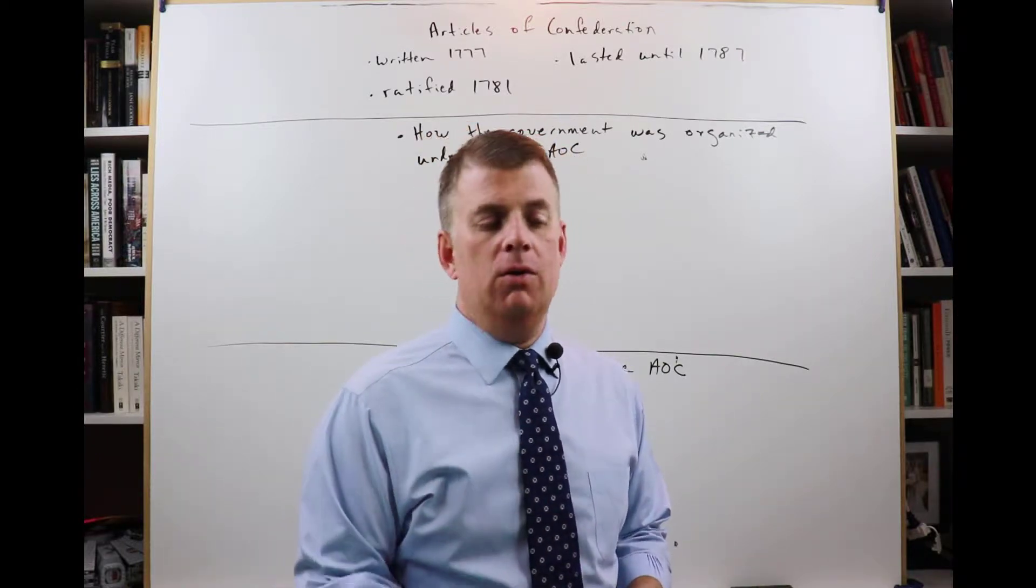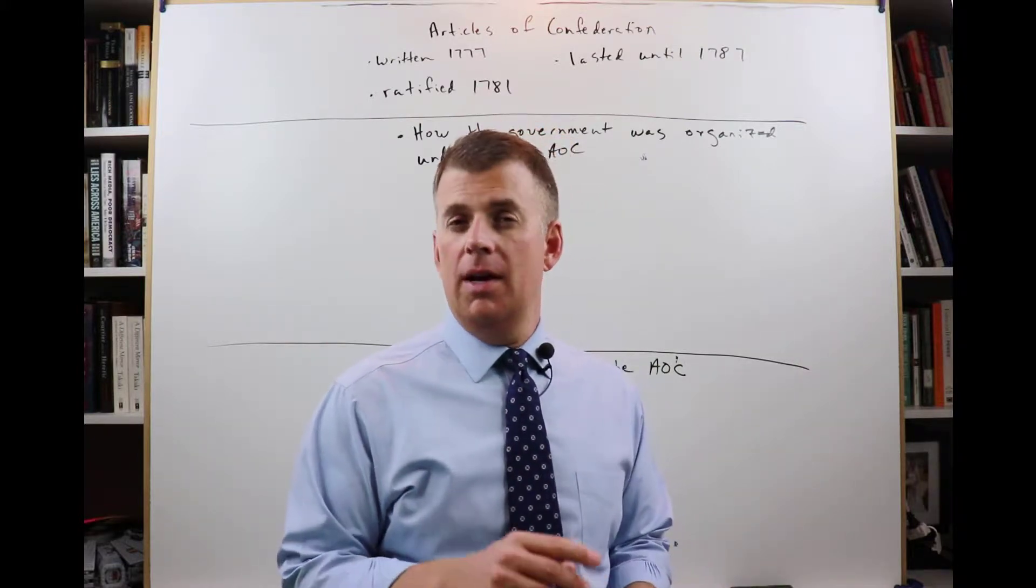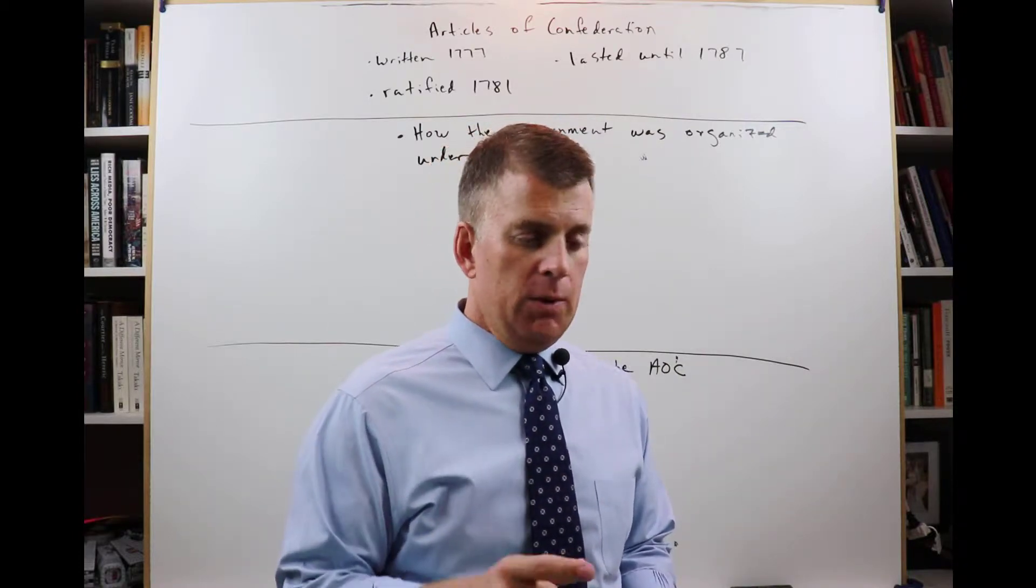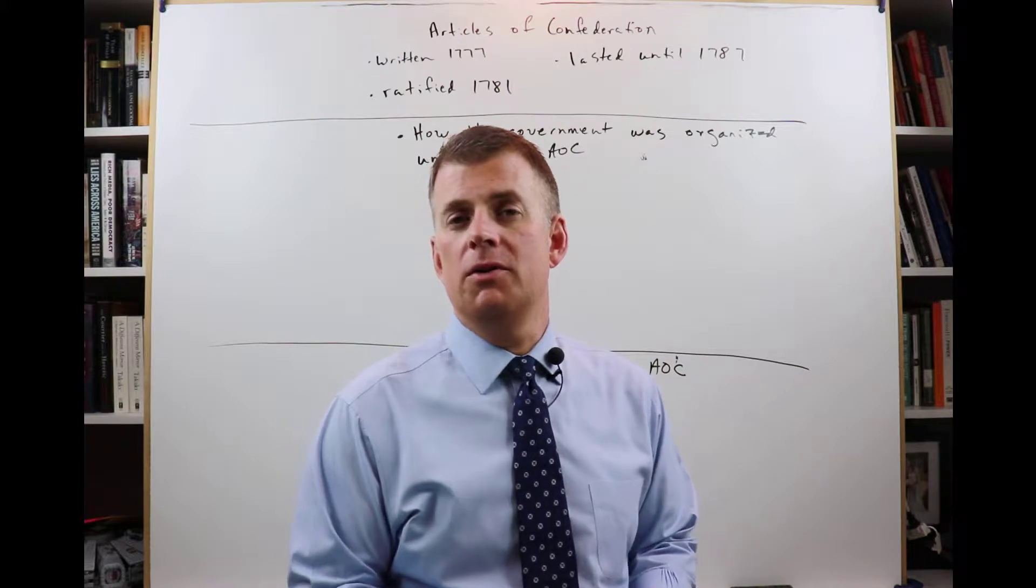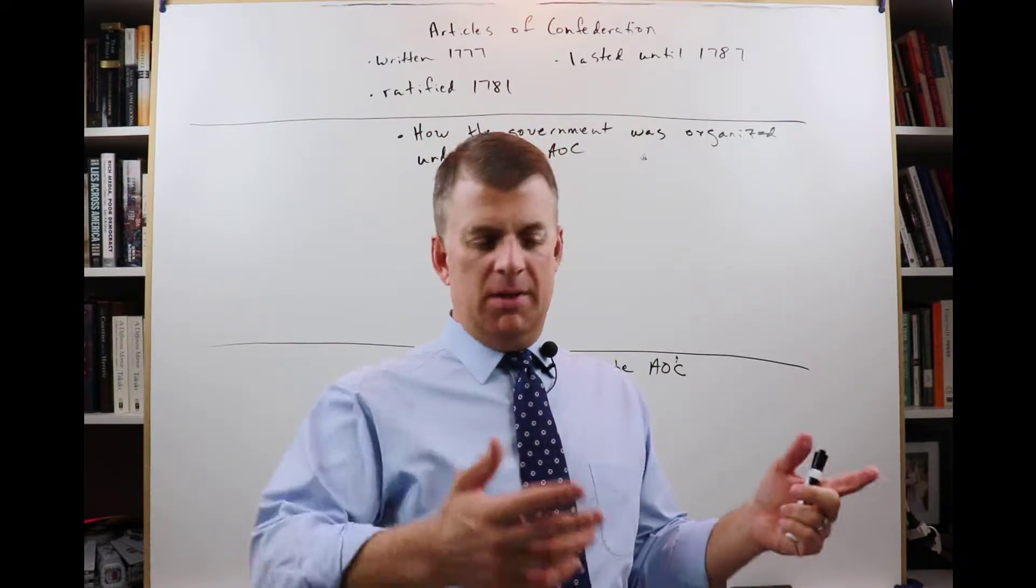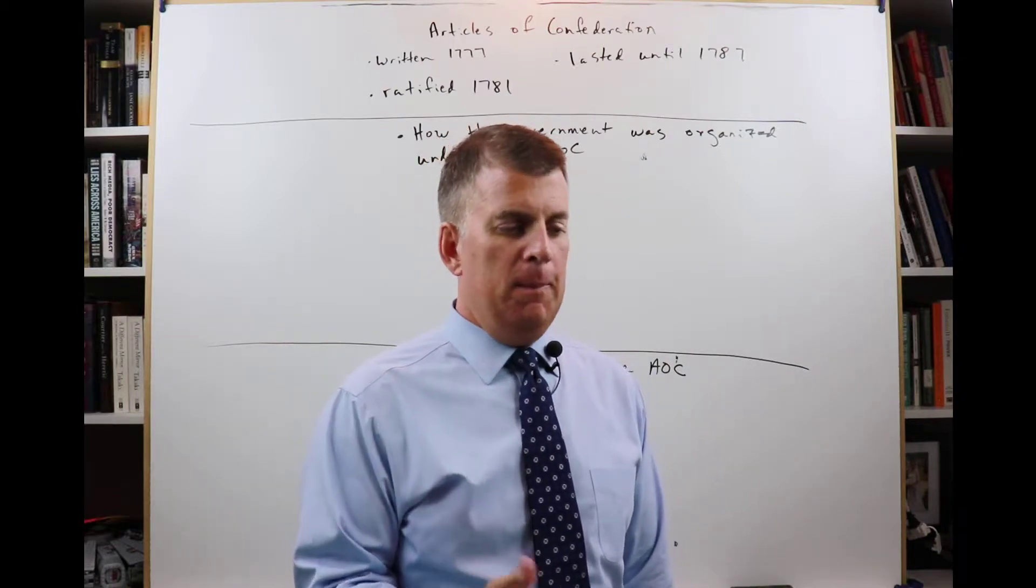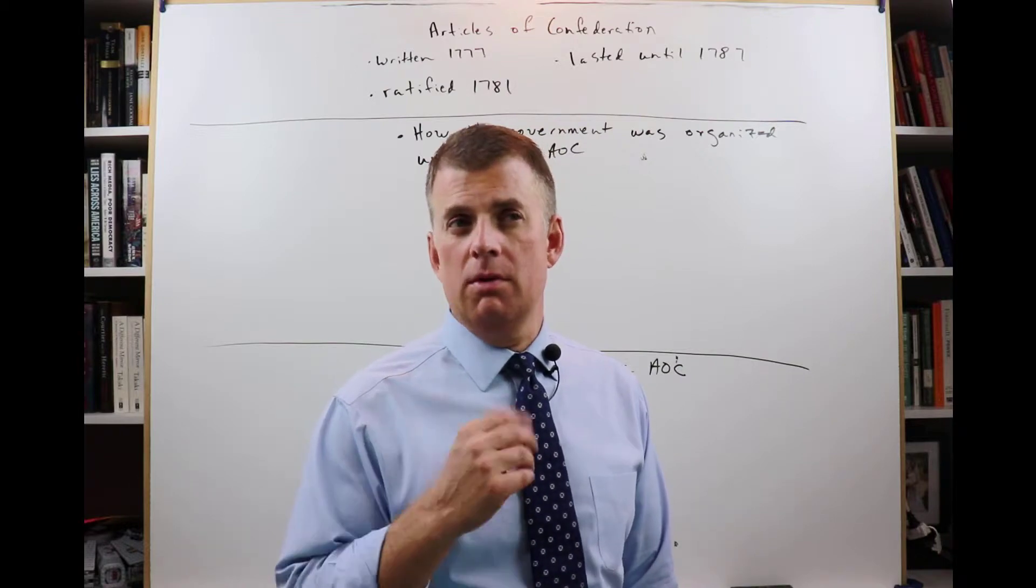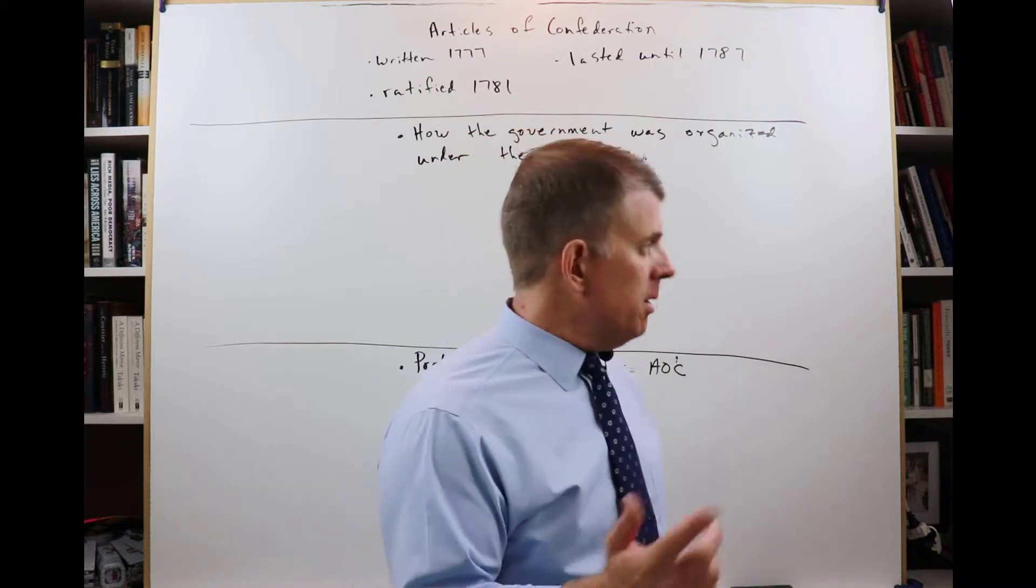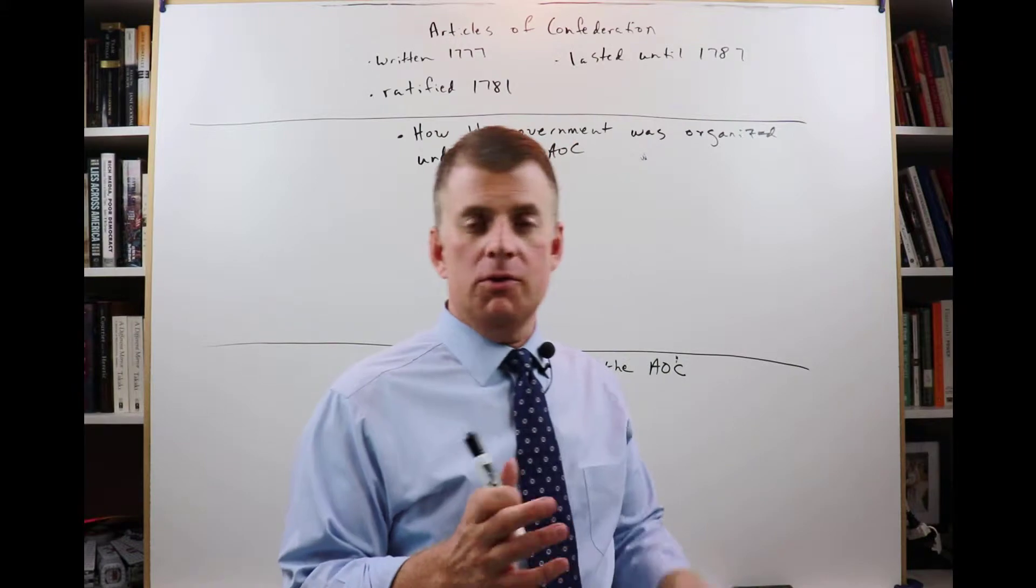The delegates to the Second Continental Congress were thinking as early as 1777, what do we do if we have a new country? What kind of government are we going to have? This group of men had to think about forming a new country, and what they came up with is the Articles of Confederation.